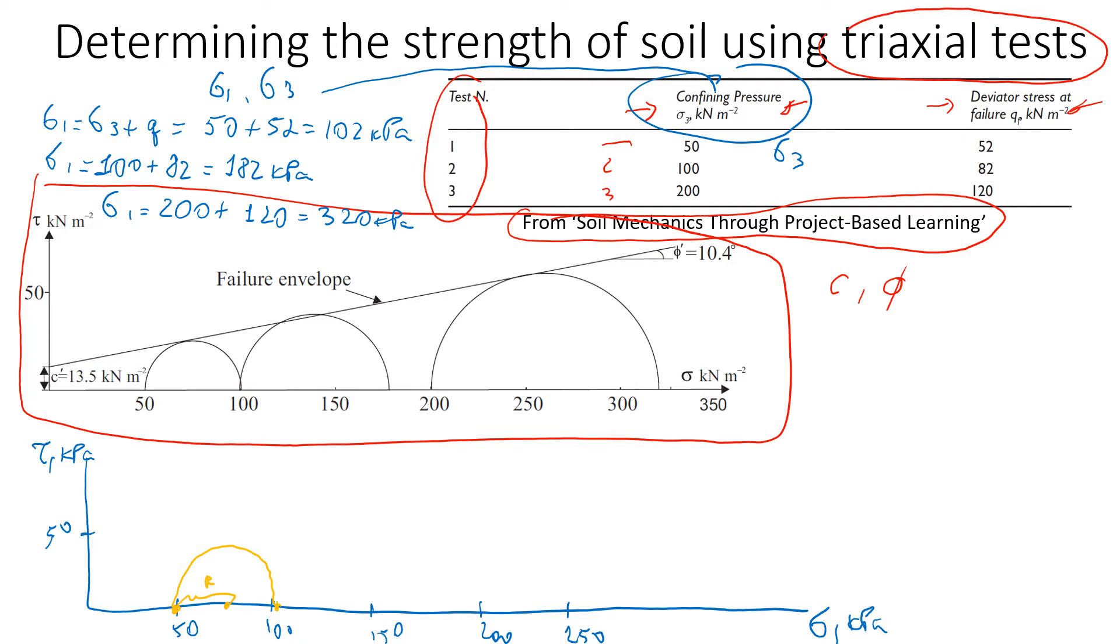Next step is to draw a second circle. The confining pressure is 100, so it's here at sigma 3. Sigma 1 is 182, somewhere here. You see the circle will be a little bit greater.